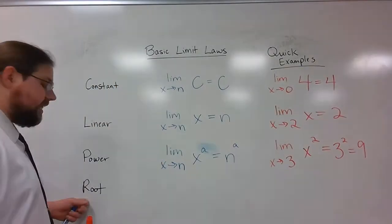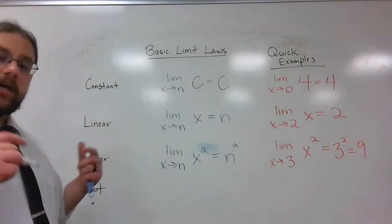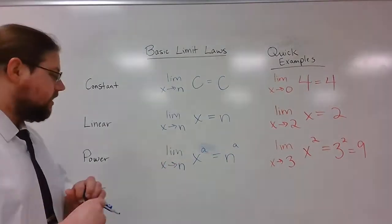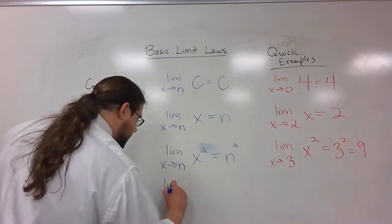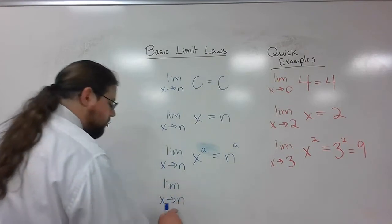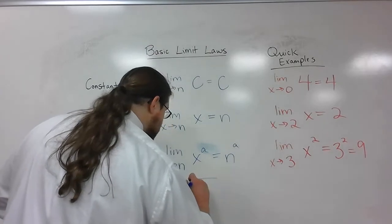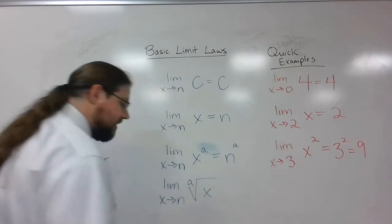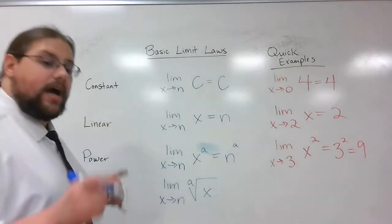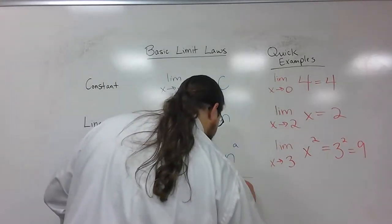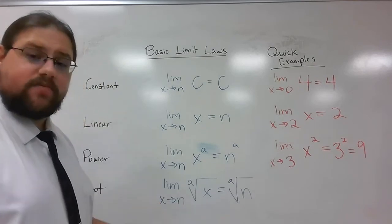One last one is I'm doing a root. That's a square root, a cube root, any of those radicals that we would do. We have to be very careful when we talk about this one. If I'm approaching some number n of a root of x, I'm going to basically do the same thing. It's just going to be that root of whatever number I'm looking for.